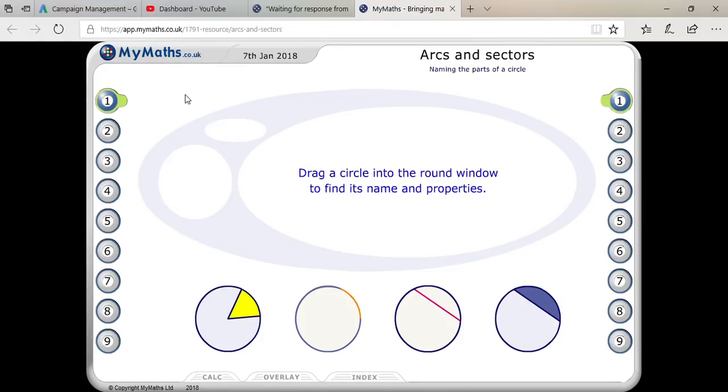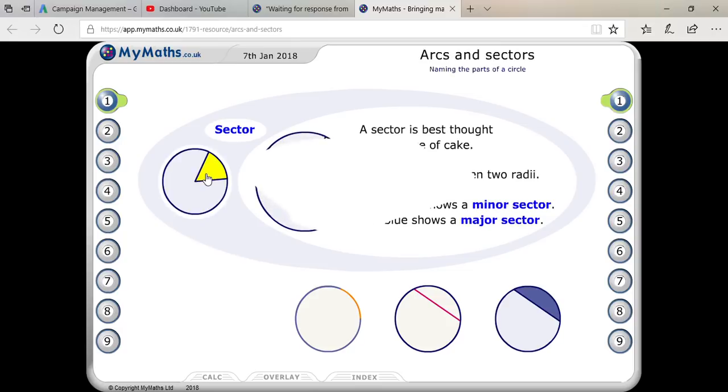Here I am going to explain the properties and names of these circles. In the first one, you can see it is a sector. A sector is best thought of as a slice of cake. You can also understand that a sector is the area between two radii. It's just like if you buy a pizza.